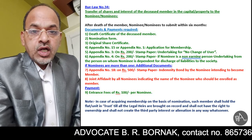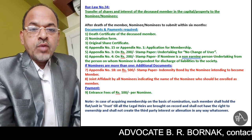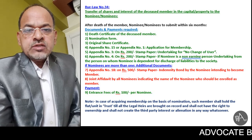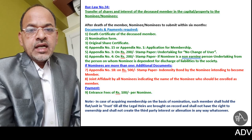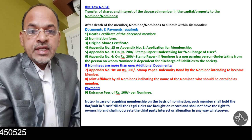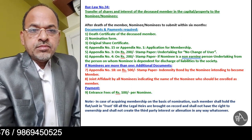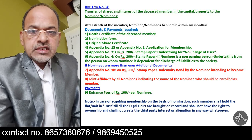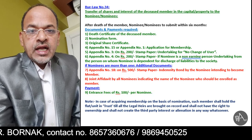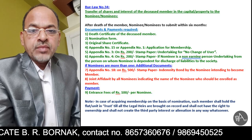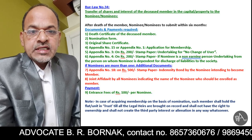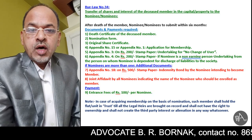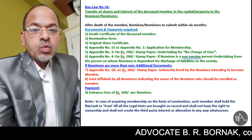Besides this, as per bylaws, some forms are prescribed which are required to be submitted by the nominee. First, that form is appendix number 15 or appendix number 1 — these two forms are either/or — for application for membership. Generally appendix number 15 is submitted when the nominee is a major and of sound mind, meaning he is competent to contract. And if the nominee is minor or of unsound mind, then appendix number 1 is prescribed.